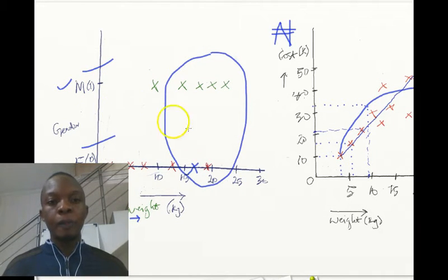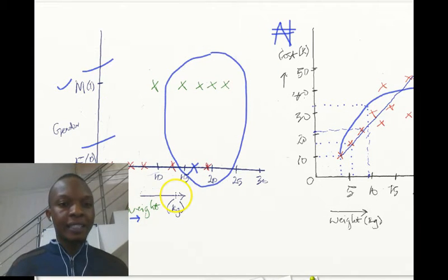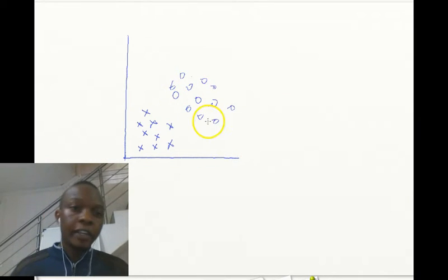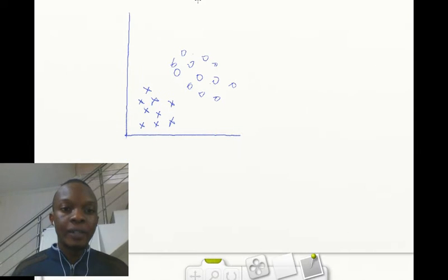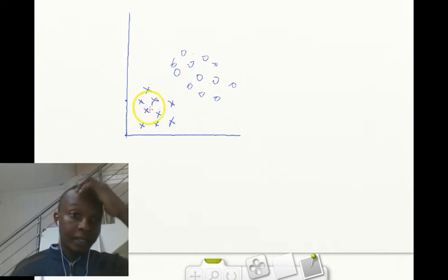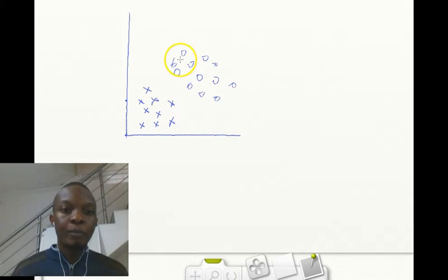Back to our classification - we have this data of how much goods weigh according to gender. If we plotted a graph and realized that most females fall into this part of our graph and most males' weights fall into this part of the graph, our algorithm might want to draw a line to divide this.